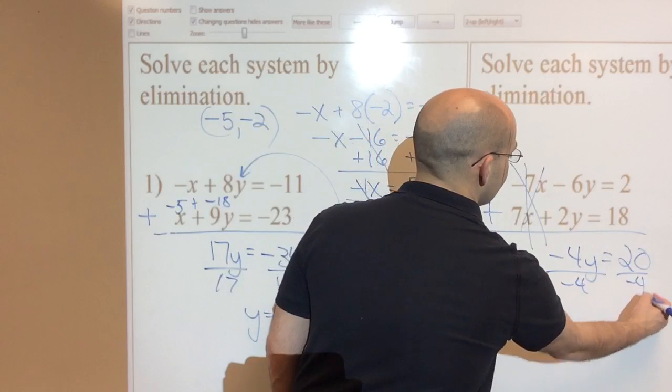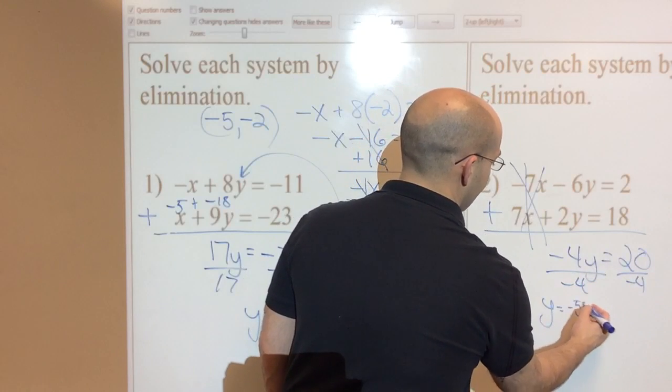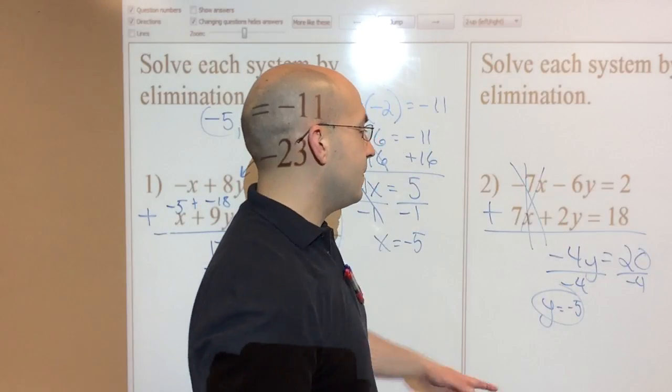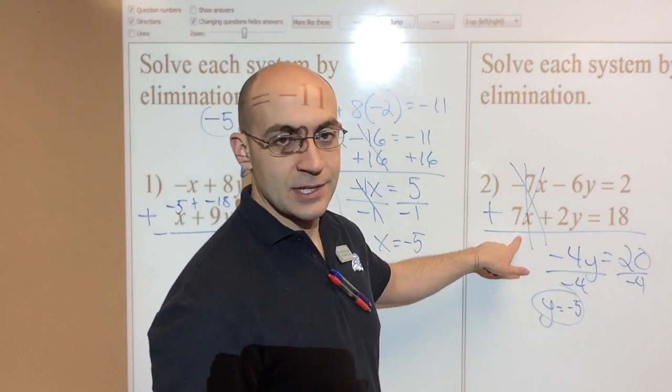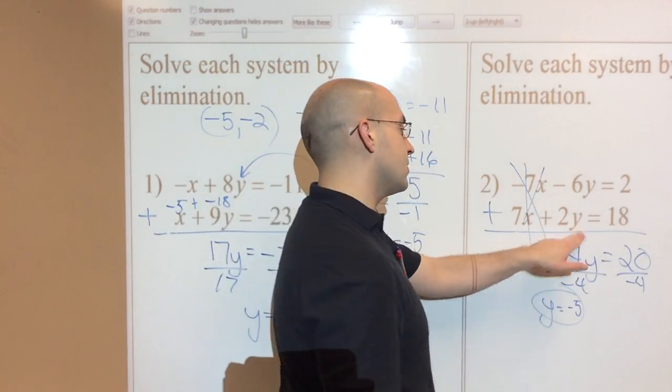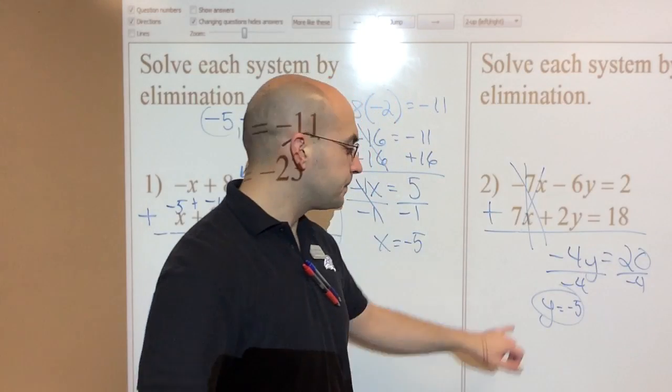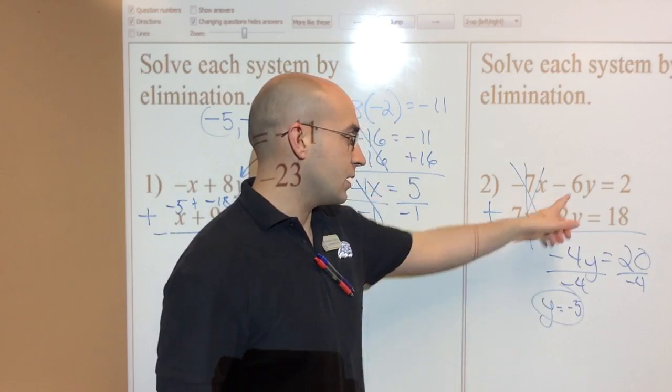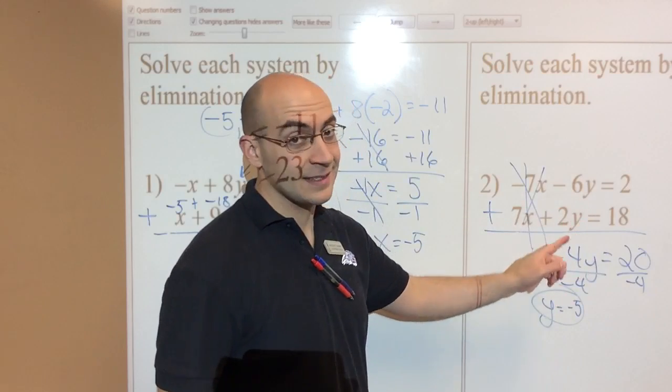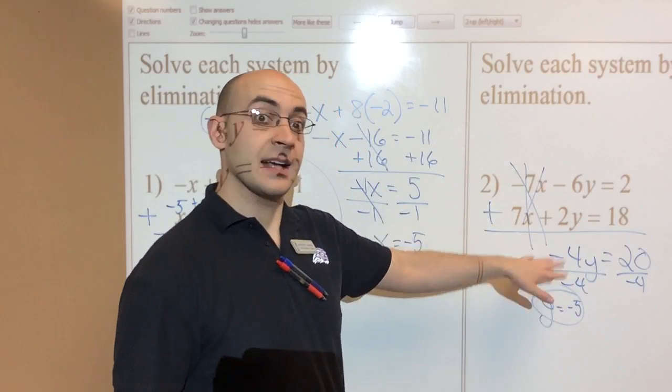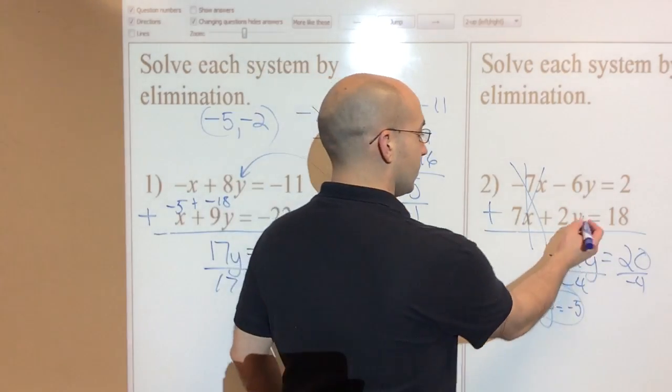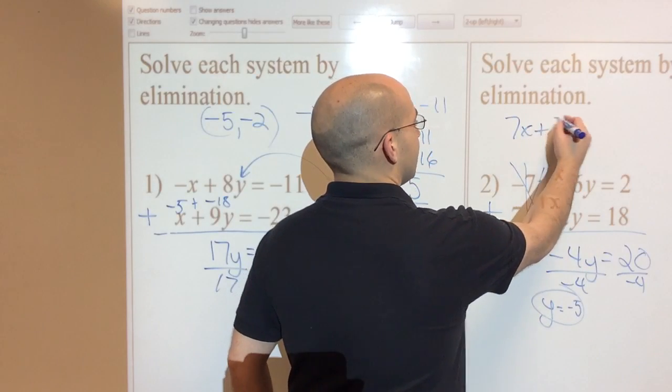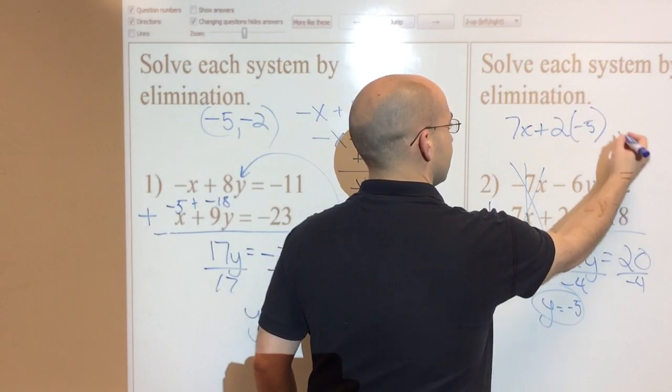Divide by negative 4 on both sides, and I'm left with y equals negative 5. But now I have to plug that back in. I definitely want to plug it into this equation. It looks a little bit easier. So negative 5 goes in here for y. Remember, make sure what value you got. Because if you crossed out the y's, you'd be plugging an x in. But we crossed out the x's, so we have a y.